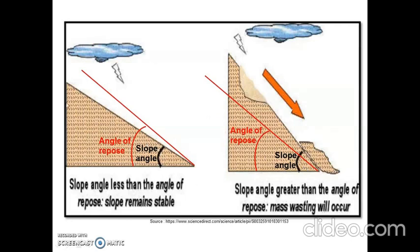Here we can see that there are two slopes. Beta represents the slope angle and this is the angle of repose. In this figure, you can see that the slope angle is less than the angle of repose; hence the slope remains stable. This is the slope which the soil can occupy without failure. When the slope angle is less than the angle of repose, it remains in a stable position.